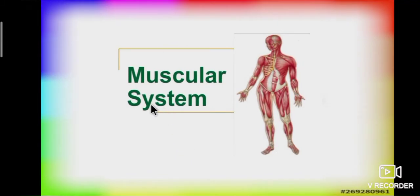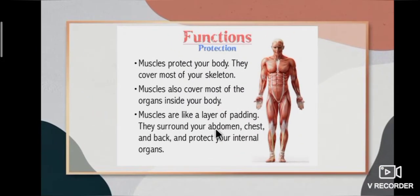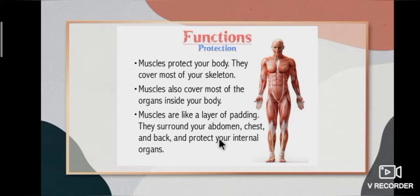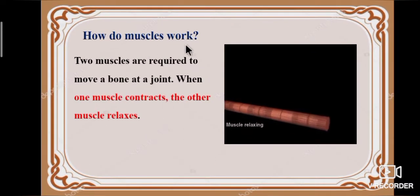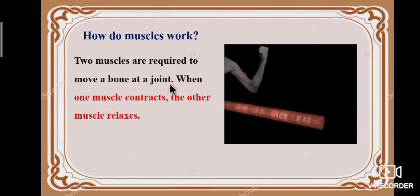The second system is the muscular system. Muscles protect your body, covering most of your skeleton and most of the organs inside your body. Muscles are like a layer of padding — they surround your abdomen, chest and back and protect your internal organs. Two muscles are required to move a bone at a joint: when one muscle contracts, the other muscle relaxes.